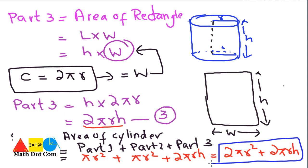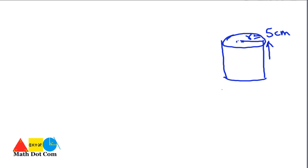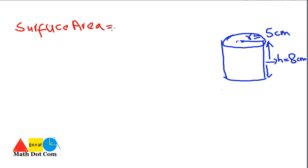That is all about how you can find the surface area of any cylinder given the radius and height. Let's use this formula in an example. If we have a cylinder where the radius r = 5 cm and the height h = 8 cm, then how will we find the surface area? We use the formula 2πr² + 2πrh and simply substitute the values.